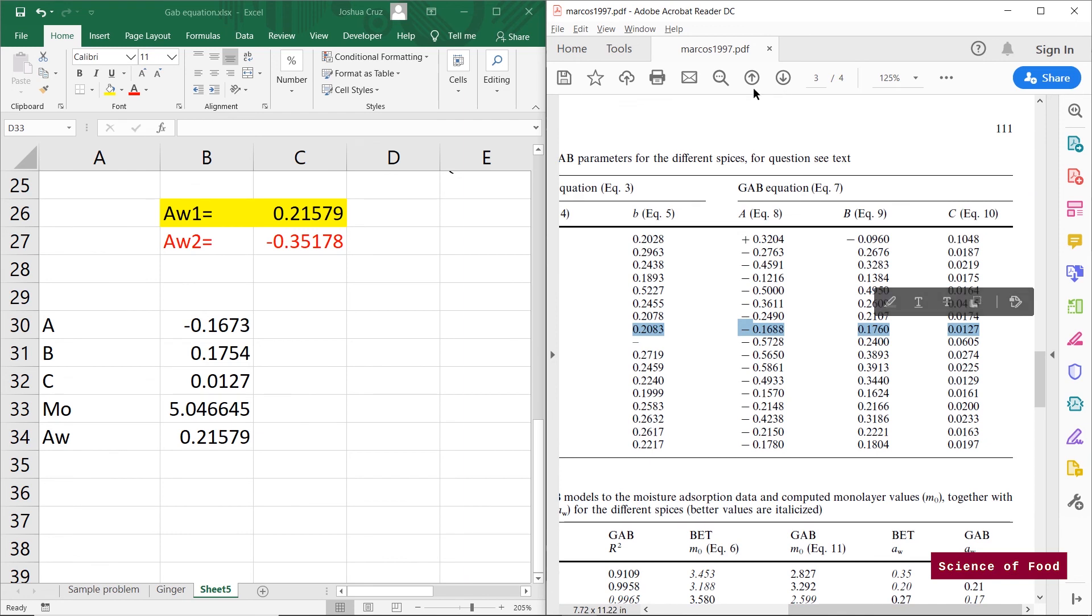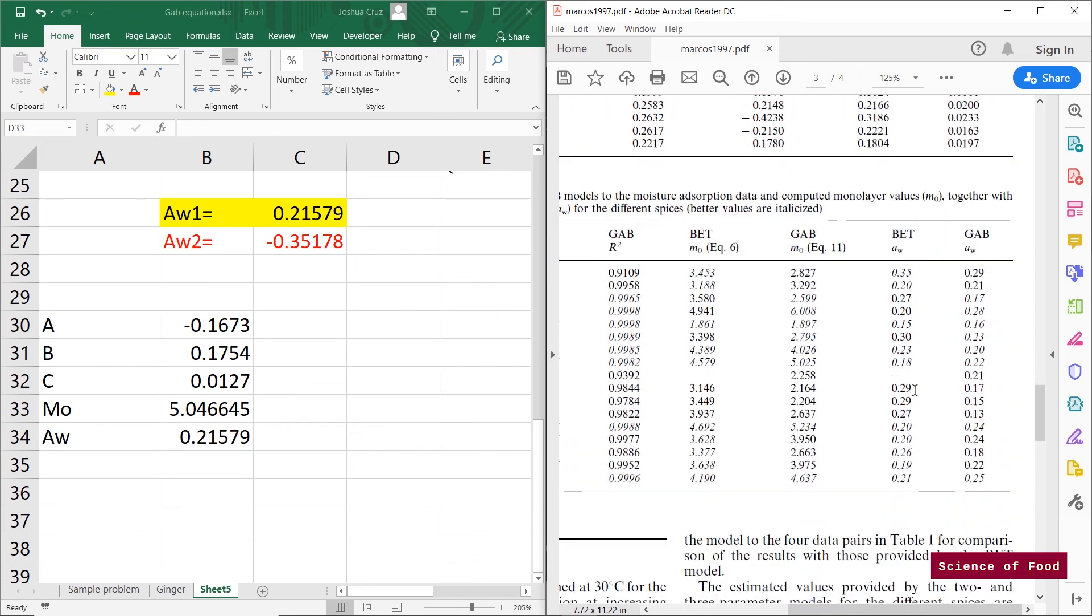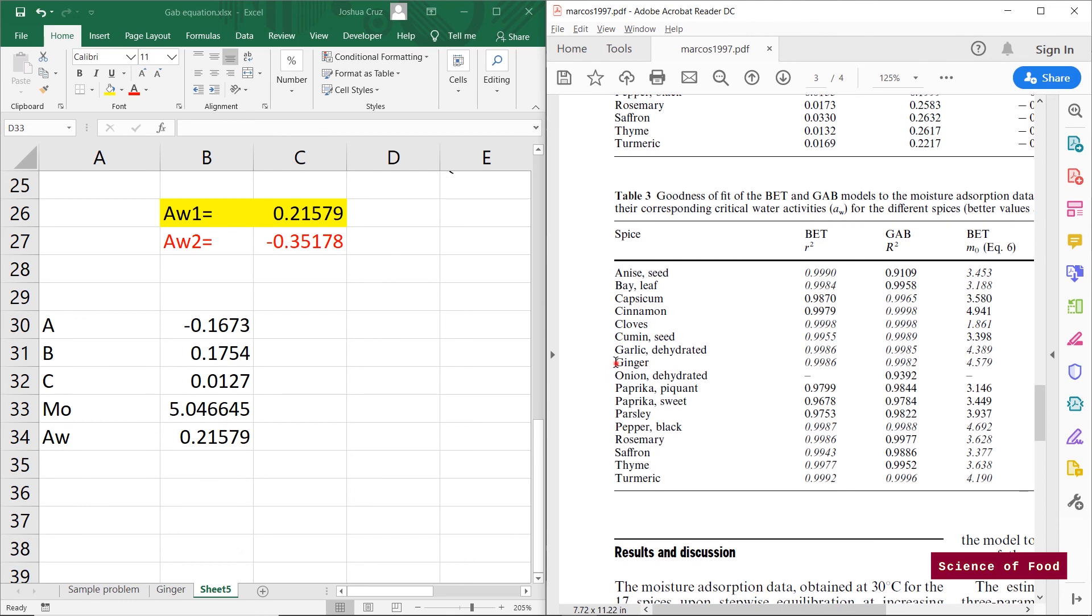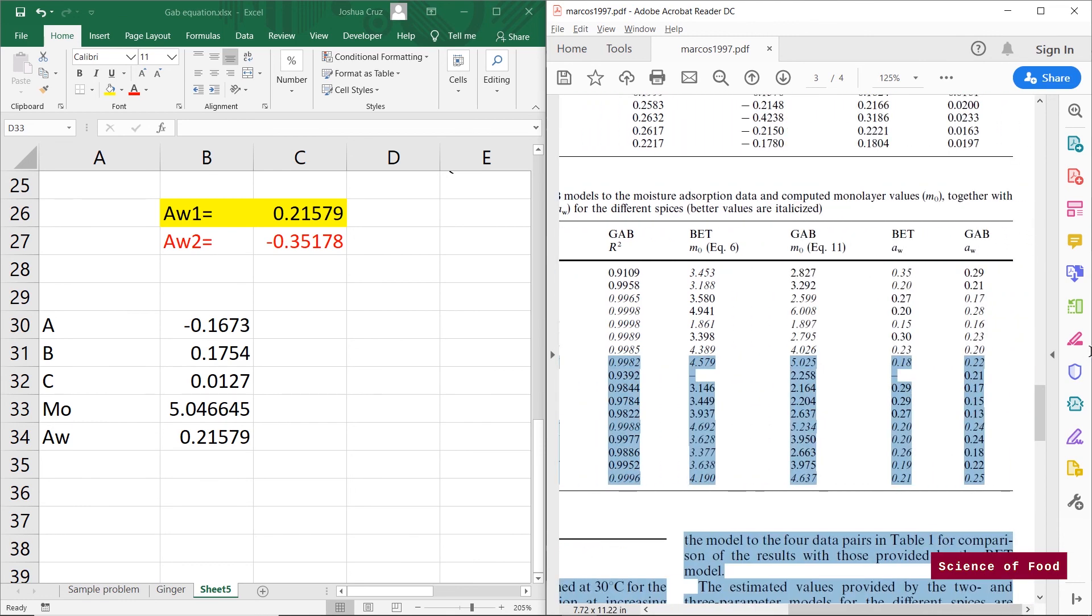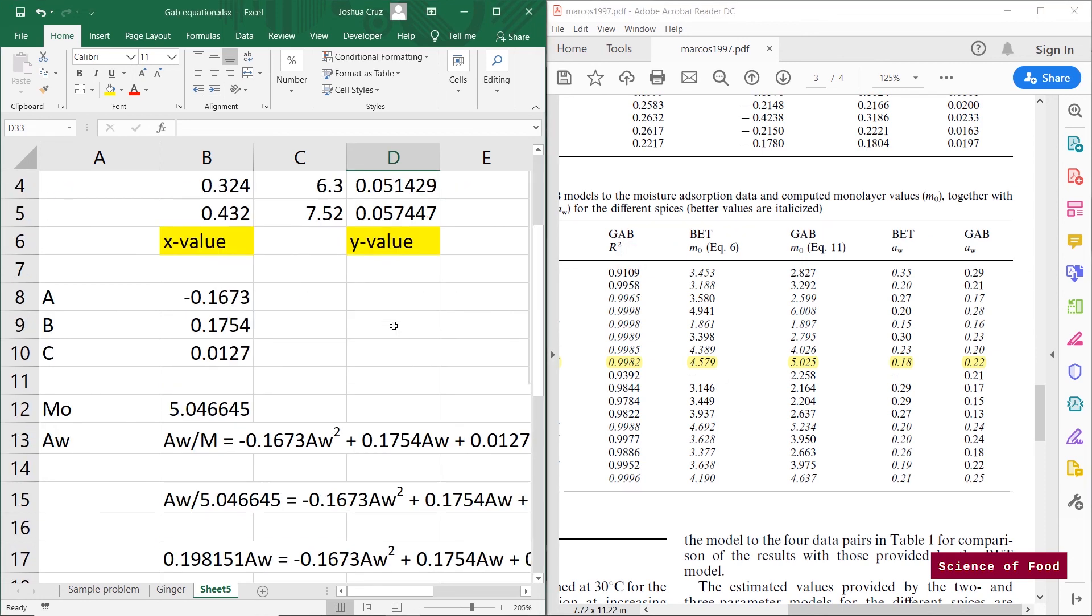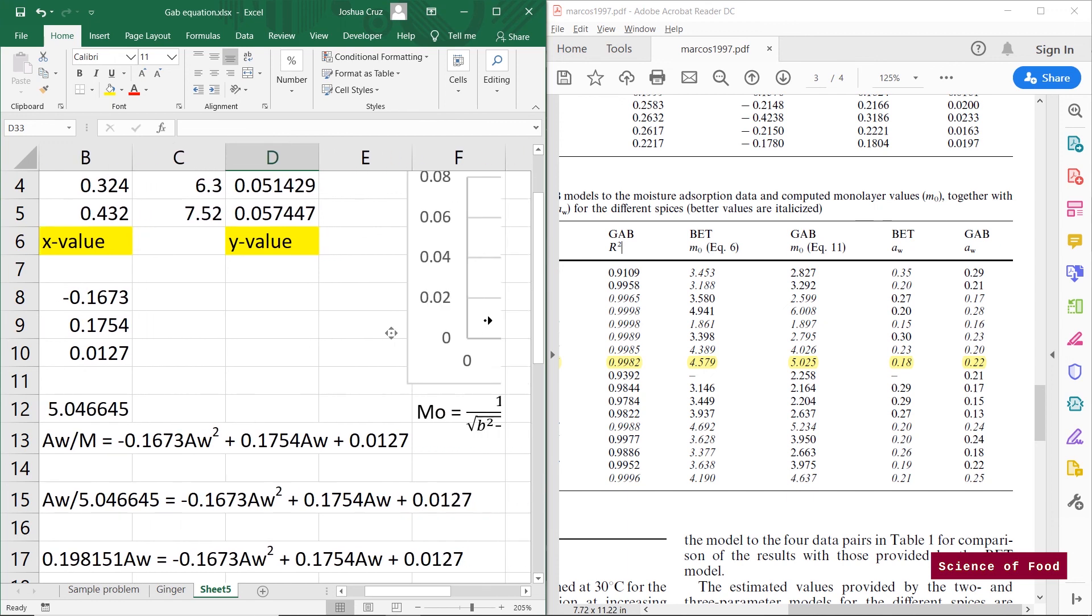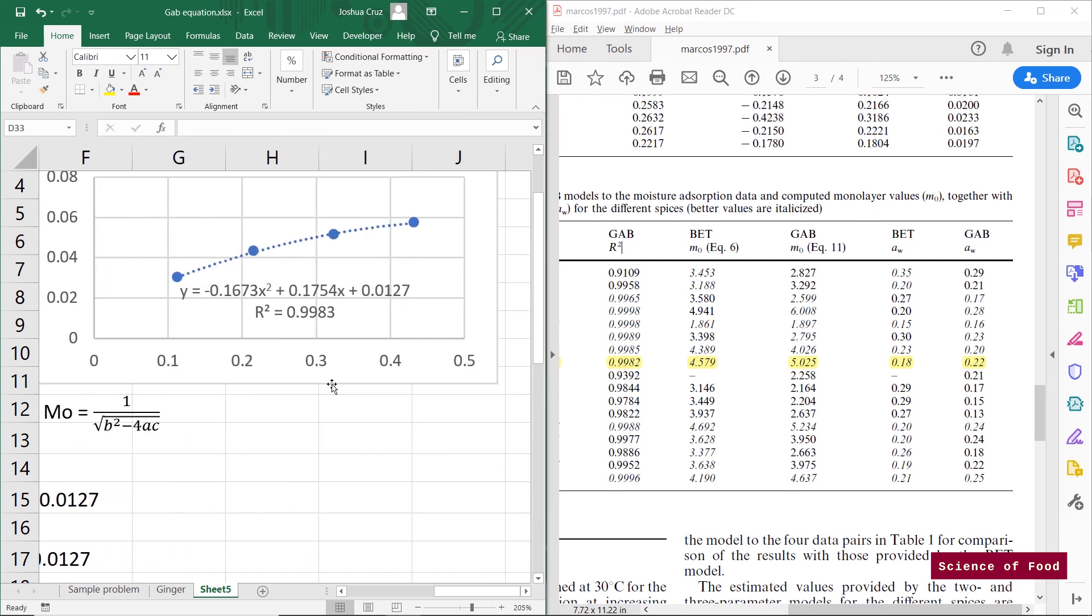I'm going to highlight this. So I have here GAB for A. We have negative 1673 and their values. Negative 0.1688 for the B. And for the B, we have 0.1754. Their value is 0.1760. It's quite close. For the C, it's the same. So let's go down here. I'm going to highlight it first so that it would be easier. There. So R squared. We have the same R squared. Let's go back to the graph. So we have the same R squared, 0.9983, which is very good.